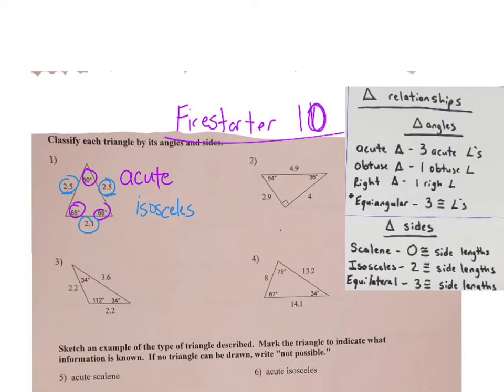Number two, I see the right angle right away. So, I know it's going to be a right triangle. Now, I look at the side lengths. They are all different side lengths. So, I'm going to say the word scalene. 4 is different than 2.9, which is different than 4.9. So, I'm going to say scalene.